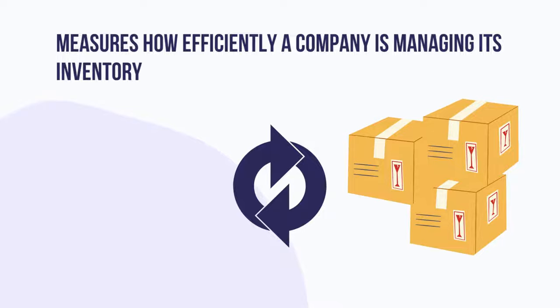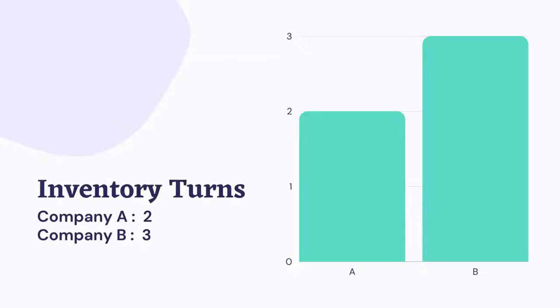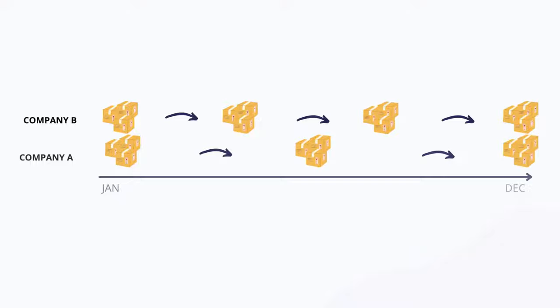For example, if inventory turnover for company A is 2 and for company B is 3, it simply means that company A has sold its entire inventory and replaced it 2 times over 1 year, while company B has sold its inventory and replaced it 3 times.